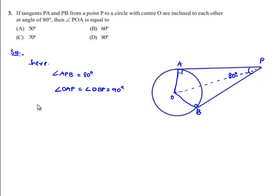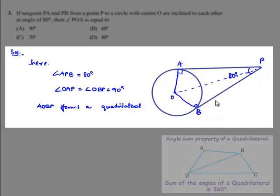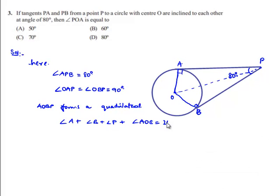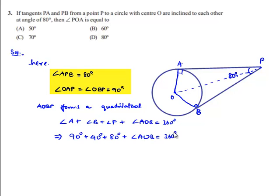Let us find angle AOB. Since AOBP forms a quadrilateral, the sum of angles = 360°, which gives: angle A + angle B + angle P + angle AOB = 360°, so 90° + 90° + 80° + angle AOB = 360°.